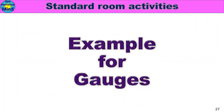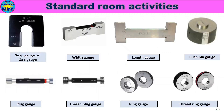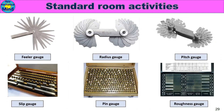Examples of gauges include: snap gauge, R gauge, width gauge, length gauge, plus pin gauge, plug gauge, thread plug gauge, ring gauge, thread ring gauge, feeler gauge, radius gauge, pitch gauge, slip gauge, in gauge, and roughness gauge.